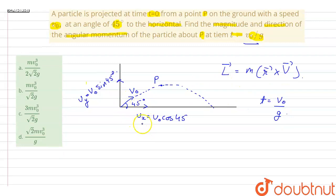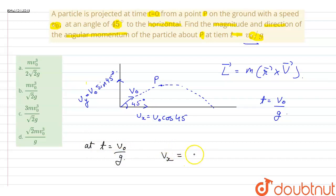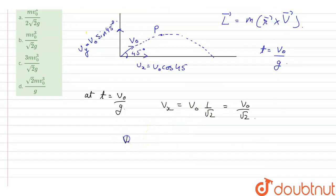In projectile motion, ux is always constant throughout the trajectory. So at time t equal to v0 upon g, the x component of velocity is vx equal to v0 cos 45, which equals v0 upon root 2. From the first equation of motion, vy equals u plus at, where the initial velocity is v0 sin 45, and in projectile motion the acceleration due to gravity is in the negative y direction.